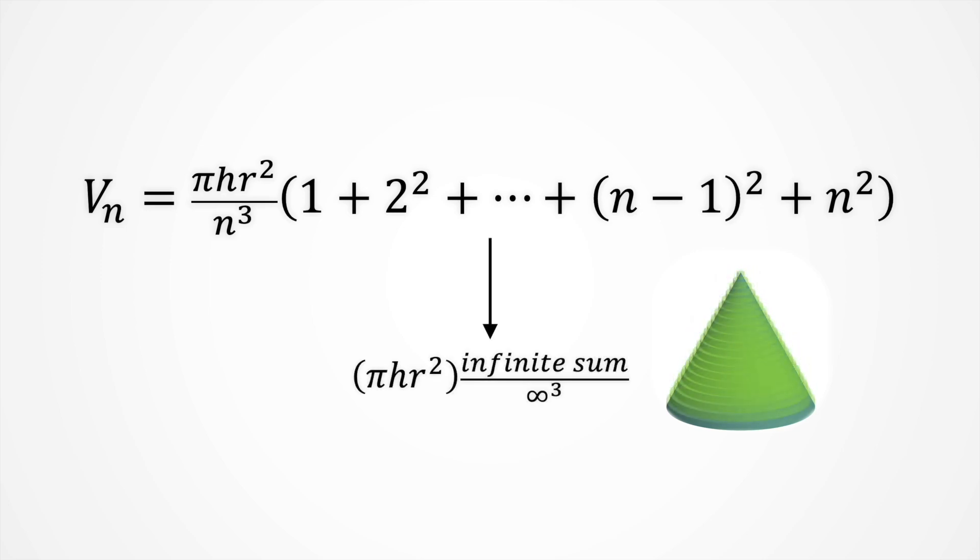an infinite sum with more and bigger terms, divided by infinity cubed. This is an indeterminate form, and to handle it, we should avoid that awkward infinite sum. So, let's see what we can do.